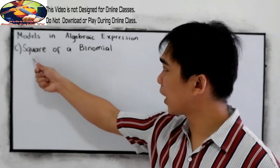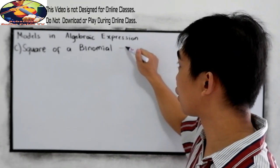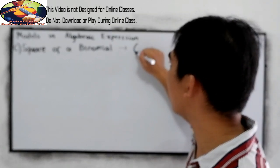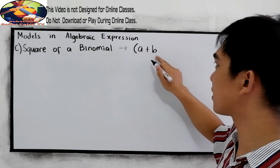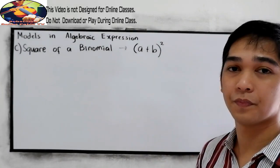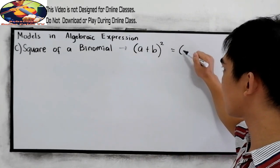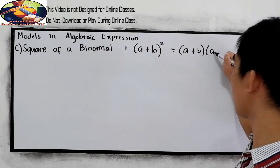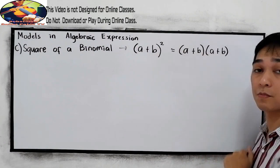Notice the square of a binomial. We have a binomial — let's say our binomial is a plus b, the first and second term separated by the plus sign, then squared. If we are going to expand this, the equivalent of that is a plus b times a plus b.